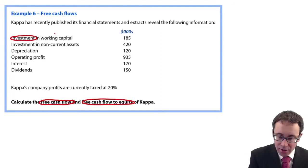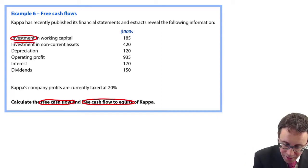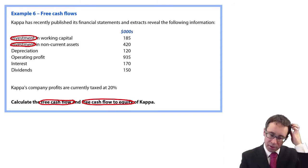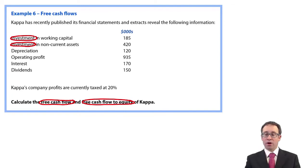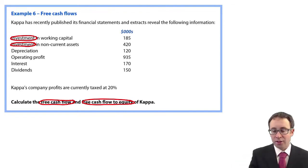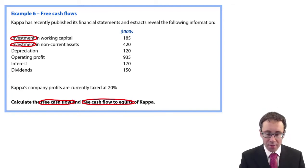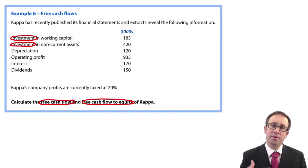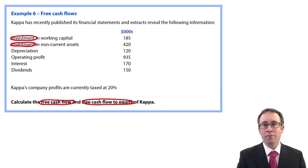So you've got an investment in non-current assets, so therefore that will be an outflow. You've got your depreciation, which is a non-cash item that will add back to the profits. You're given your operating profit of 935, so that's where we will start in a moment. And then you've got interest and dividends - interest payments, dividend payments - we might need to look at those when we're making any adjustments as we go through.